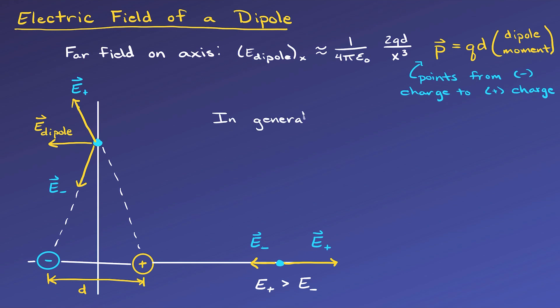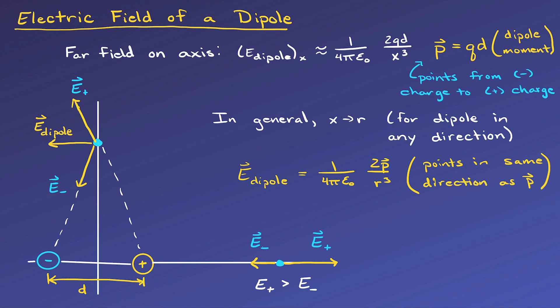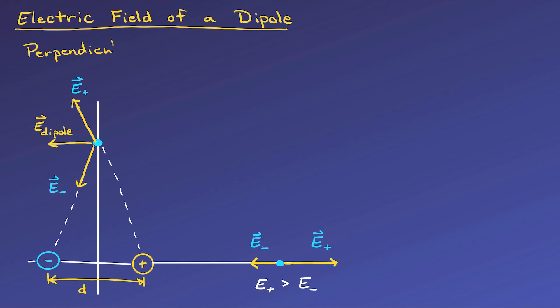To write the electric field more generally now, we can replace x with r, and q times d with the dipole moment p. r here just represents the distance between the center of the dipole and the point on the axis where we want the field, just like x did in our example. So we do this because if our dipole is not oriented along the x or y axis, and it's just oriented in some other direction, we can use r as this distance the same way we did x in our example, and we can get a general expression no matter which way our dipole is pointing.